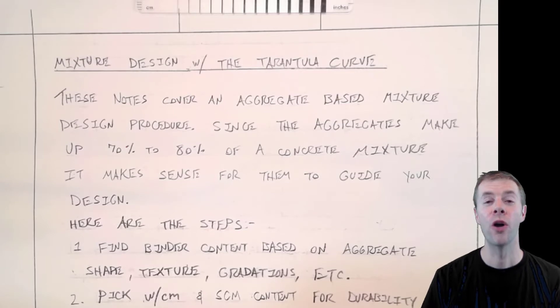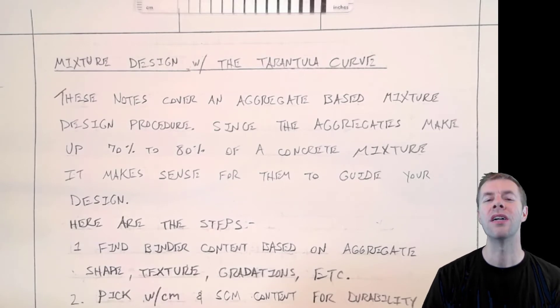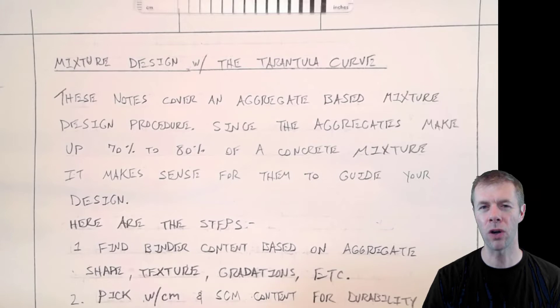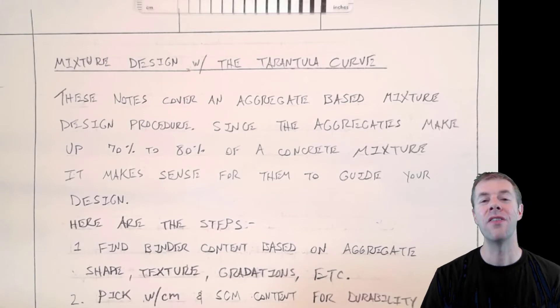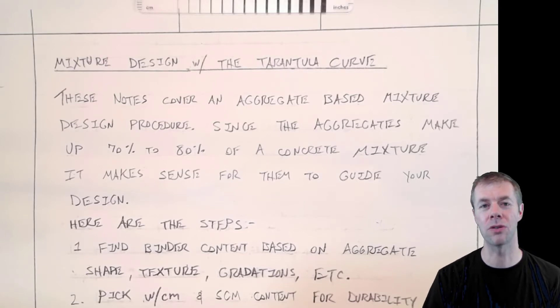In this mixture design procedure, it's going to be aggregate-based. Why do we do that? Well, aggregates make up about 70 to 80% of the volume of the concrete mixture. So doesn't it make sense that whatever procedure you use to design that concrete mixture is really focused on those aggregates, what their characteristics are, what their properties are, and how that controls your mixture design? This is the Tarantula Curve mixture design procedure based on lots and lots of research, hundreds and hundreds of concrete mixtures.